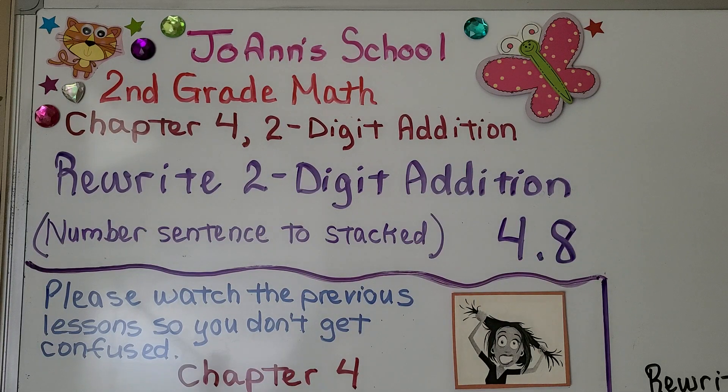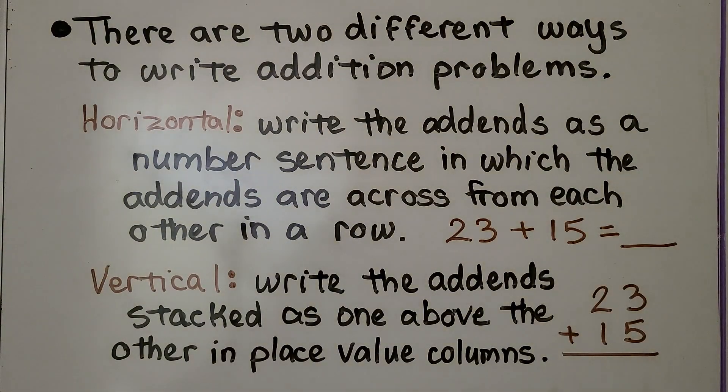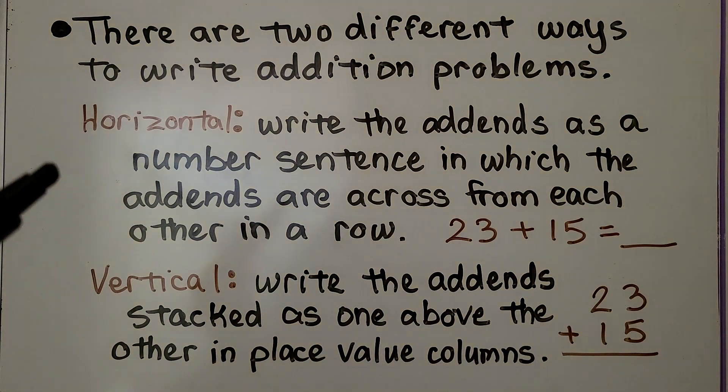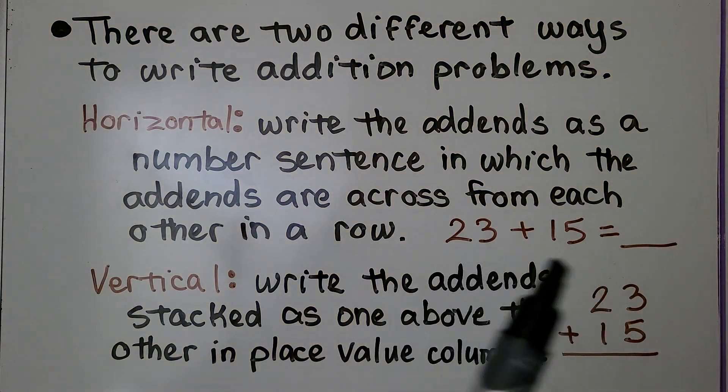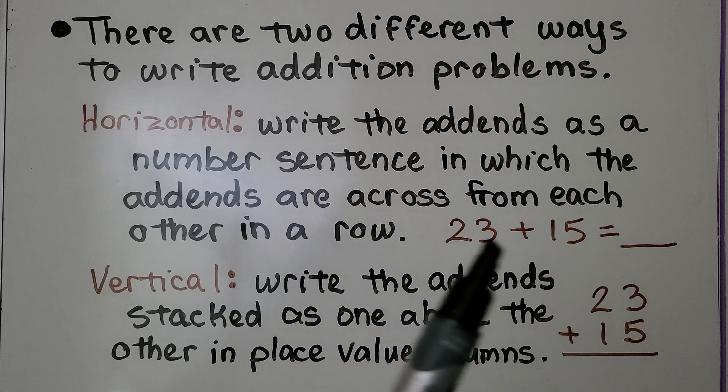Lesson 4.8: Rewrite Two-Digit Addition. There are two different ways to write addition problems. We can write them horizontal. We write the addends as a number sentence in which the addends are across from each other in a row. It's a number sentence.